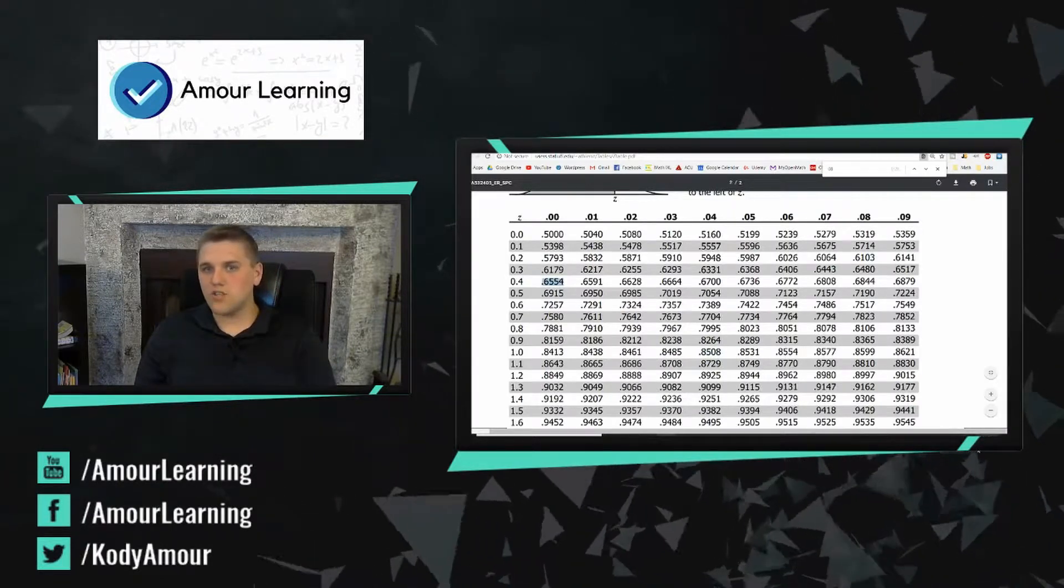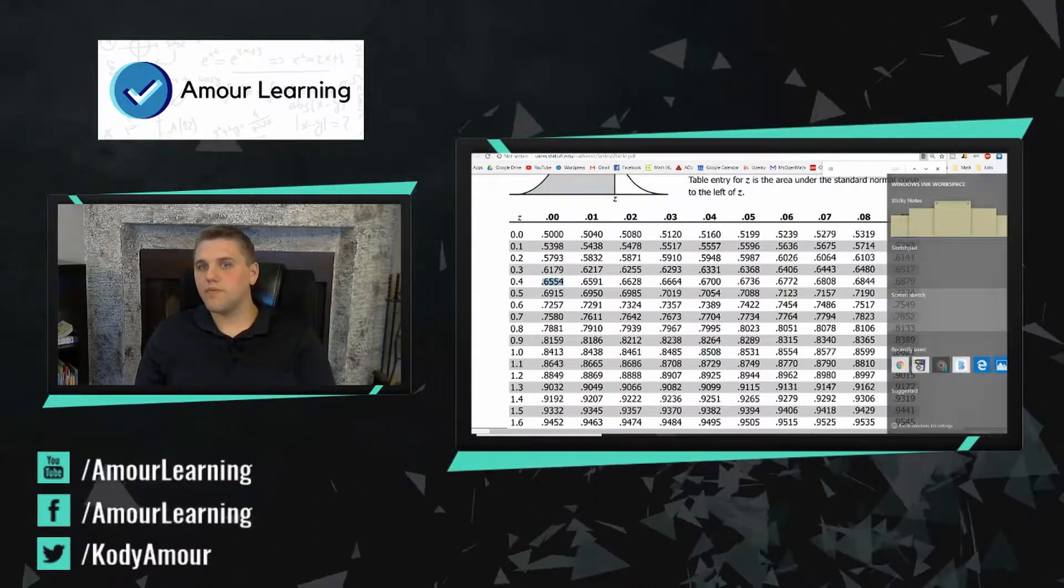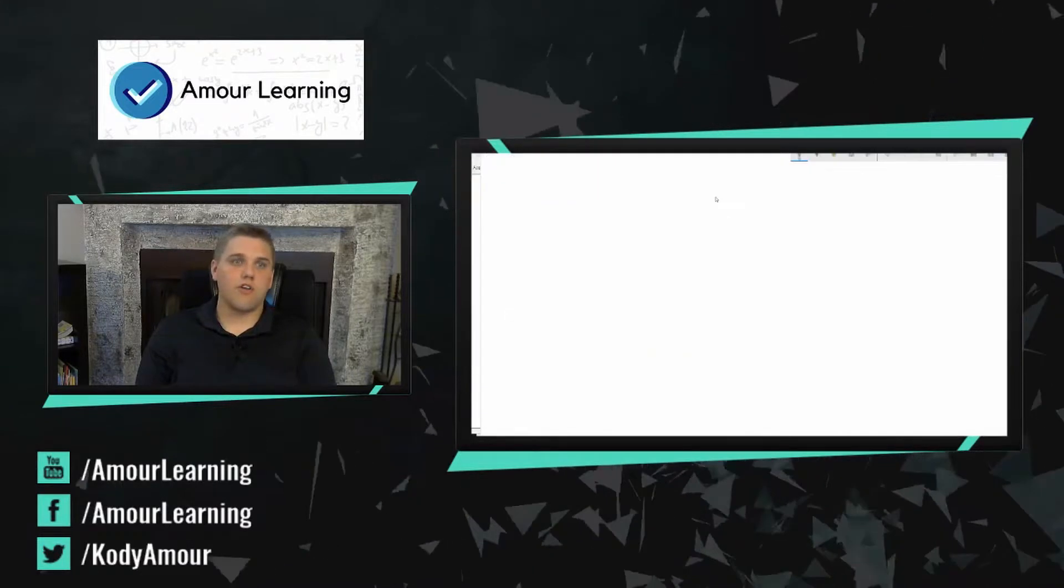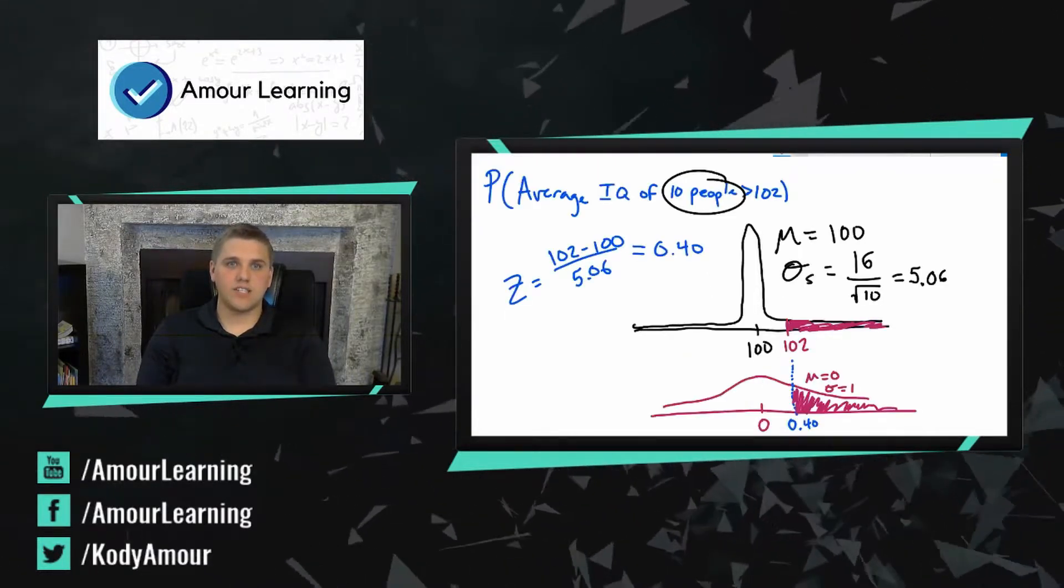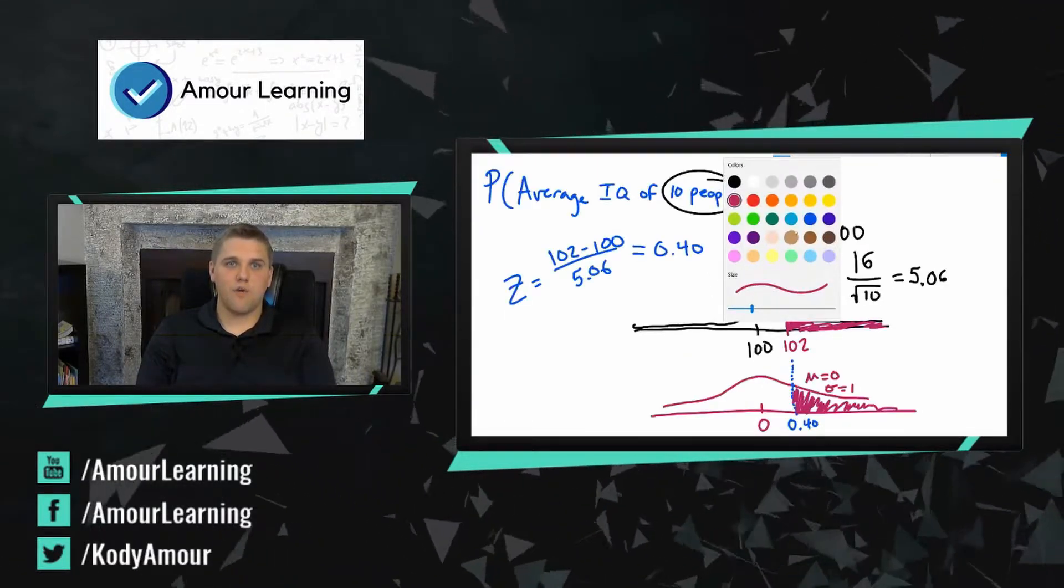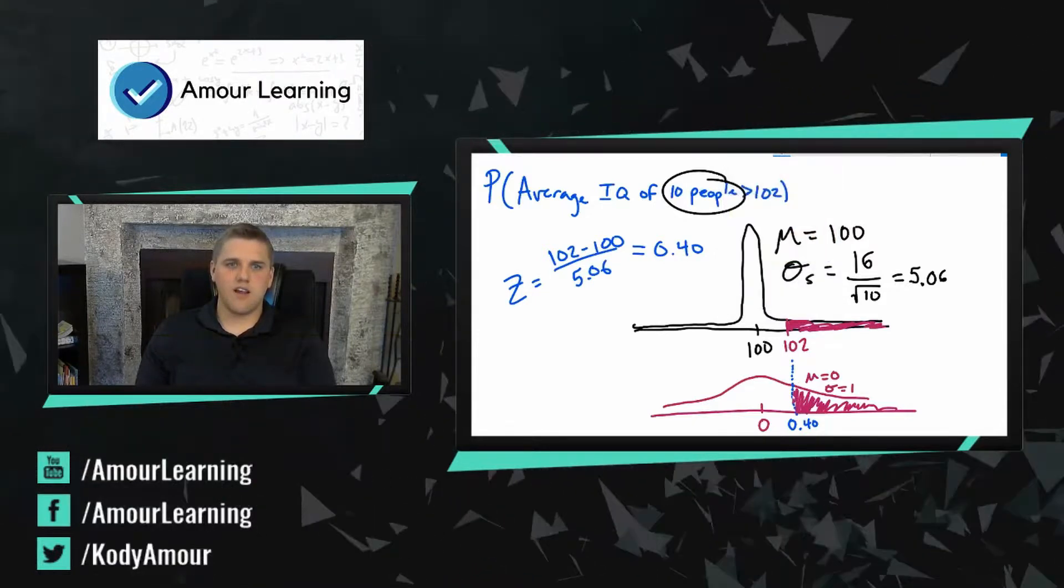So let's go back to my bell curve and say that this is 0.6554. What is this area right here?